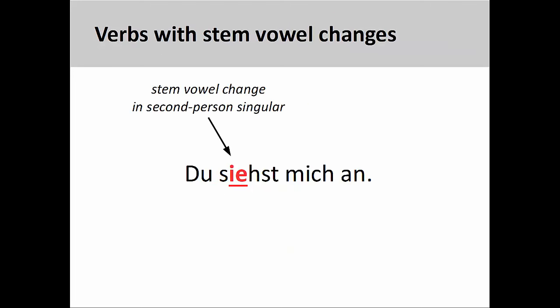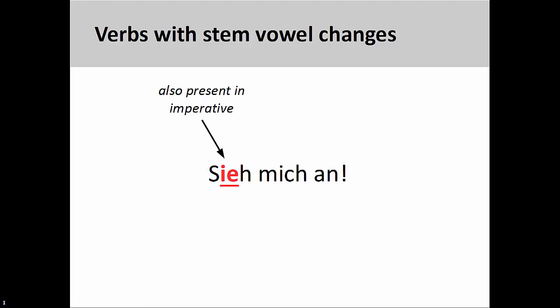Now that we've talked about the consonant endings of verb stems, let's talk about stem-vowel changes. Verbs that have a stem-vowel change in the present tense also have the same change in the informal imperative. For example, the stem-vowel for the verb sehen, meaning to see, changes from -e to -ie in the second person singular: du siehst mich an — you are looking at me. The same stem-vowel change is also present in the singular informal imperative: sieh mich an — look at me.